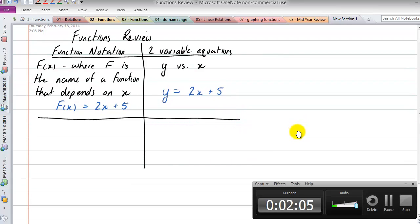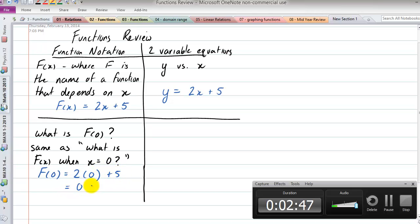But some of this does leave to confusion. So maybe one of the first things that may be confusing is maybe you're asked, what is f(0)? And what that really is saying is, what is the function when x is equal to 0? And we can work that out. We can say that f(0) is equal to 2 times 0 plus 5. So that's 0 plus 5, so f(0) is equal to 5.